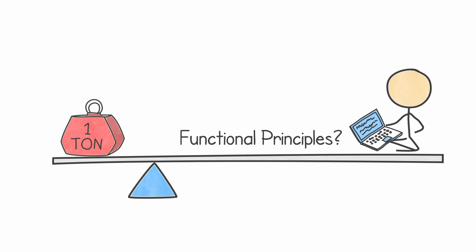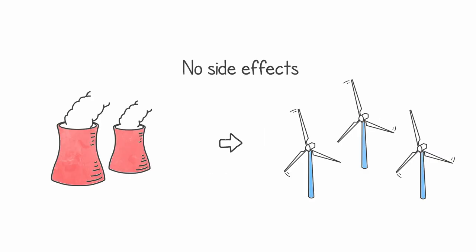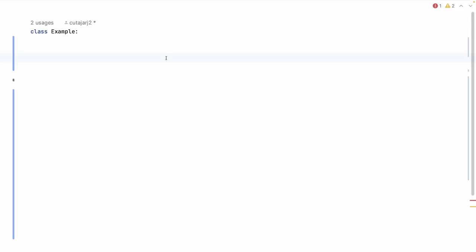Let's have a look at three main principles from functional programming. The first principle is to try not to have too many side effects in your code. What is a side effect? A side effect is something that changes the state after you perform an operation, such as calling a function. Let's have a look at an example.